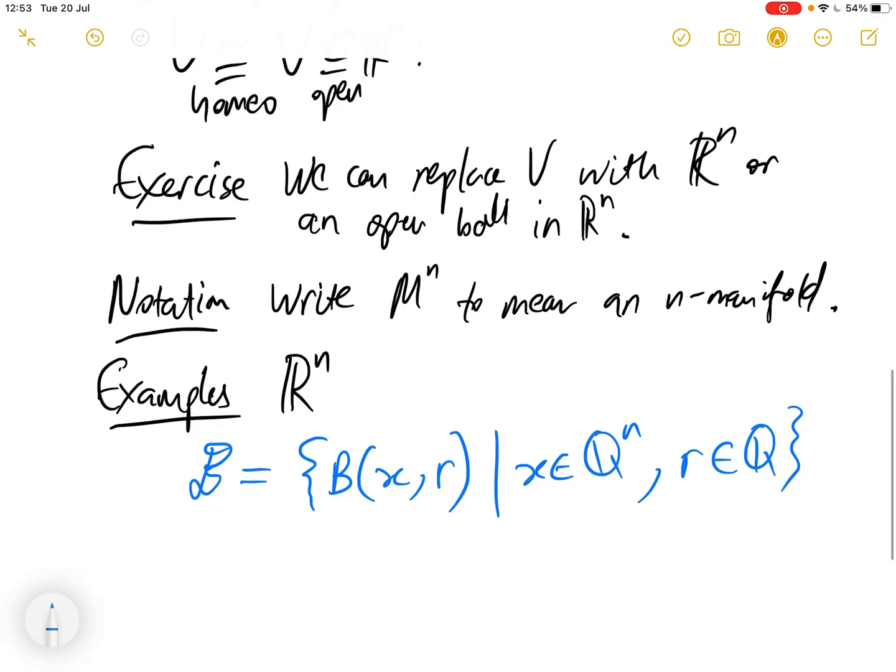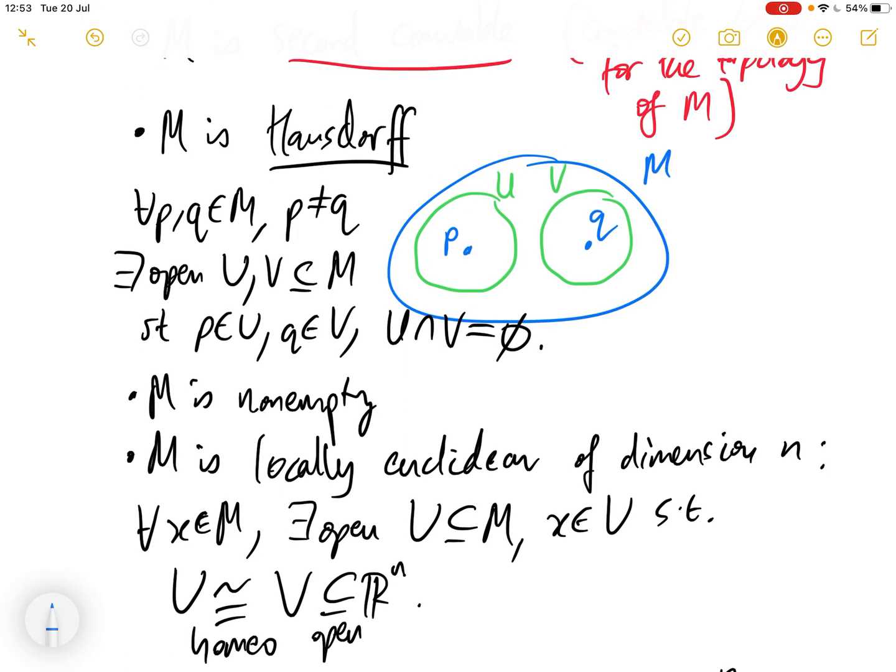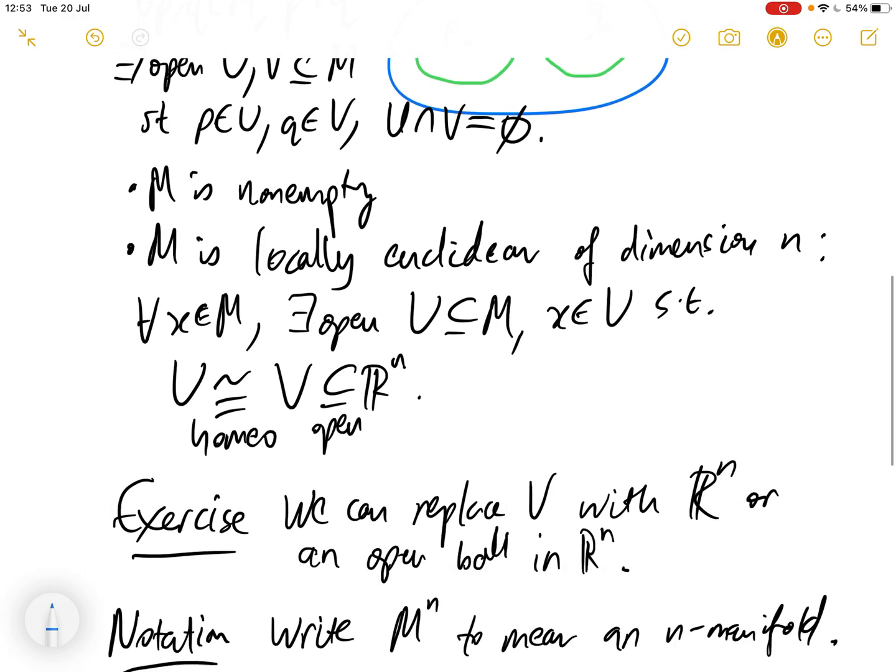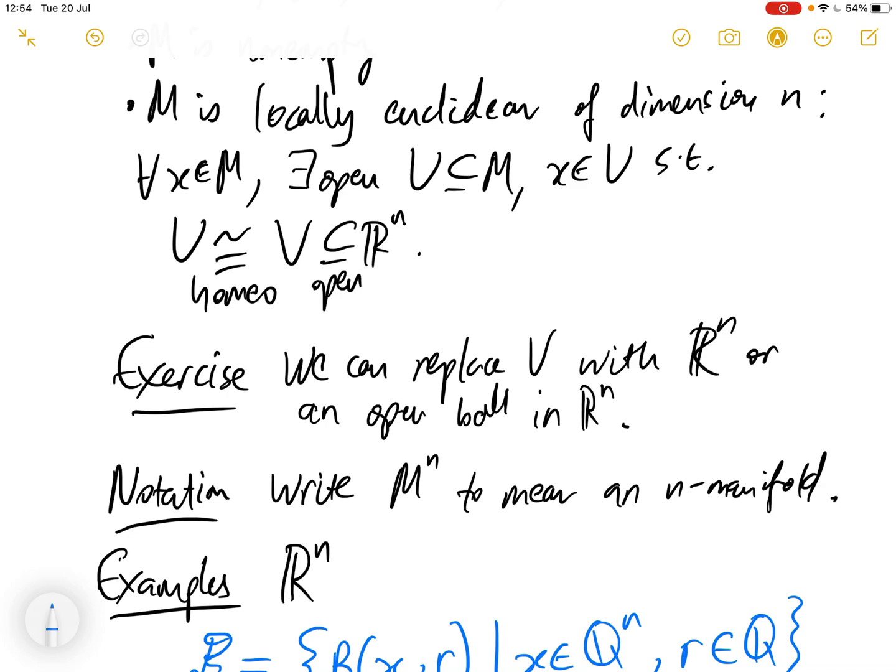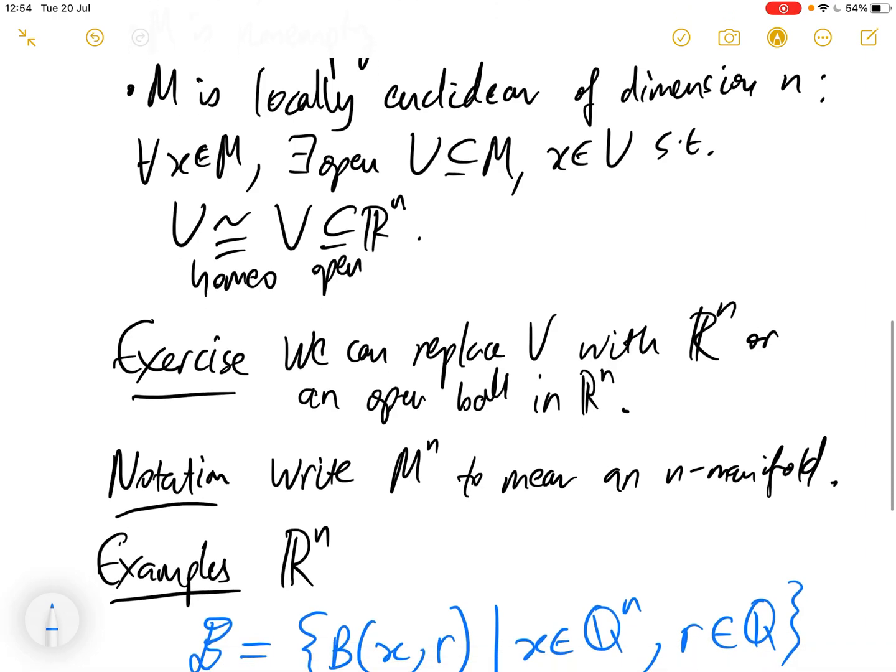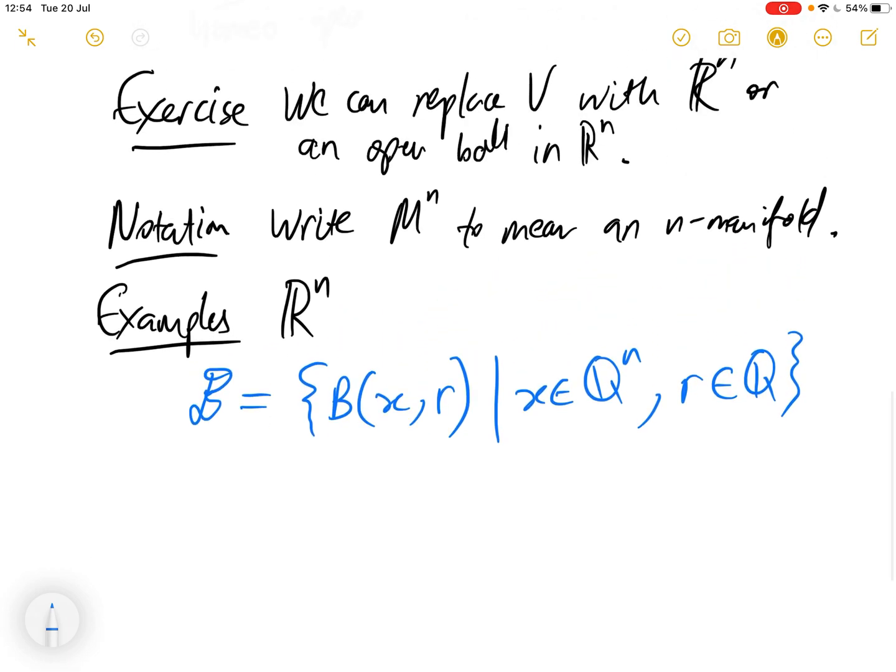Why is R^n Hausdorff? Well, R^n is a metric space, and metric spaces are always Hausdorff. Certainly R^n is non-empty. R^n is locally Euclidean - this is easy to see because for every point in R^n, R^n itself is an open neighborhood of that point homeomorphic to itself. So certainly R^n is locally Euclidean of dimension n. So R^n is an n-manifold.